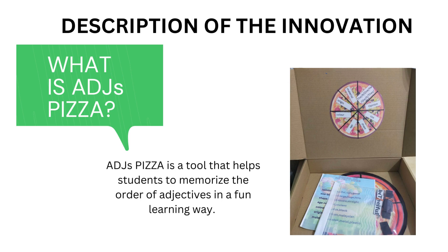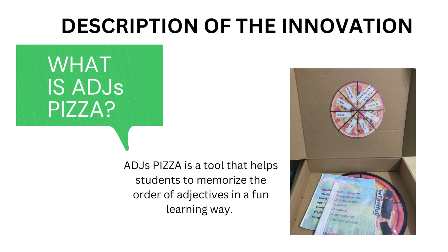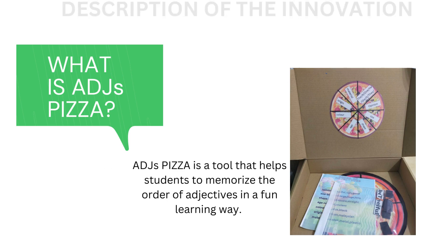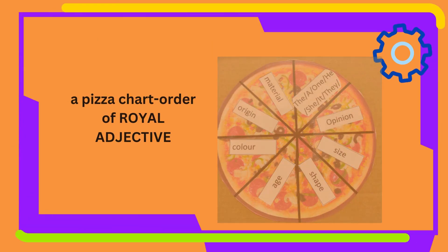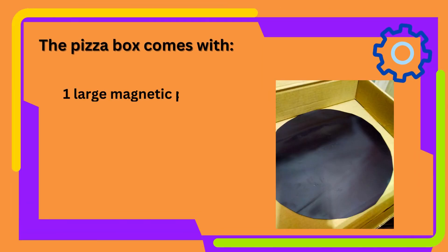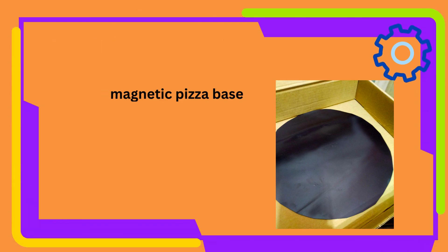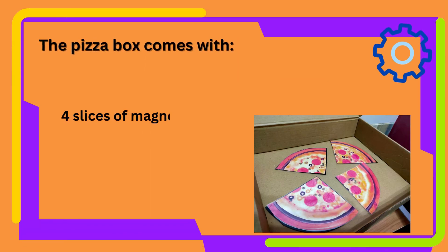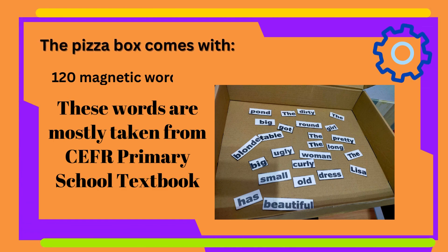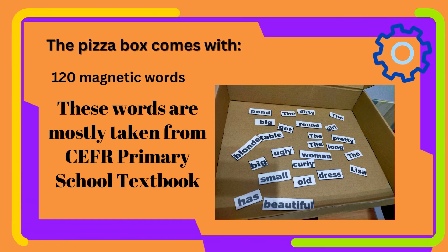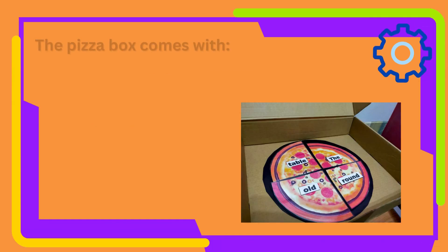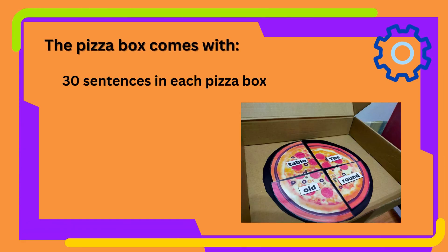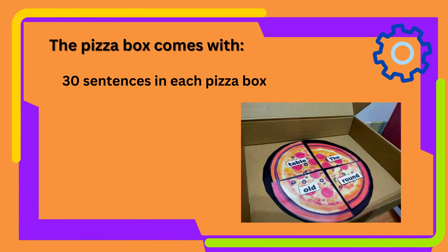What is Edge Pizza? Edge Pizza is a tool that helps students to memorize the order of adjectives in a fun, engaging way. The pizza box comes with a pizza chart order, 1 large magnetic pizza base, 4 slices of magnetic pizza, 120 magnetic words — where these words are mostly taken from CEFR primary school textbooks — and 30 sentences in each pizza box.